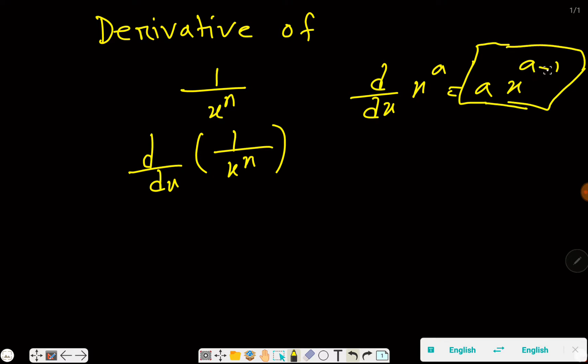Look, 1 over x^n. If you take this variable to the top, then you have to change the sign of this power. All right, so d/dx of x^(-n). We can rewrite this.